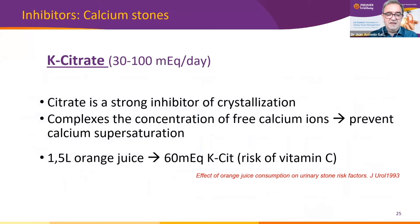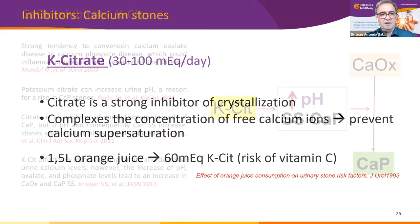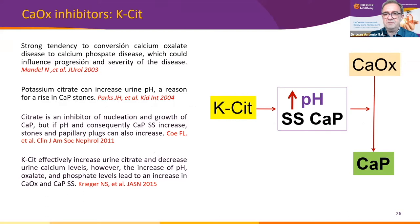Together with thiazides, potassium citrate is one of the most commonly used drugs in stone disease. It prevents calcium supersaturation by complexing free calcium in urine, and also acts as a strong inhibitor of crystallization. We can use orange juice, for example, to avoid taking medication, but we would need quite a large amount of juice to reach therapeutic ranges. Potassium citrate can decrease calciuria and increase citraturia, but it also increases urinary pH and subsequently calcium phosphate supersaturation.